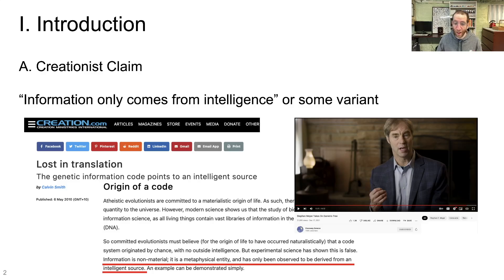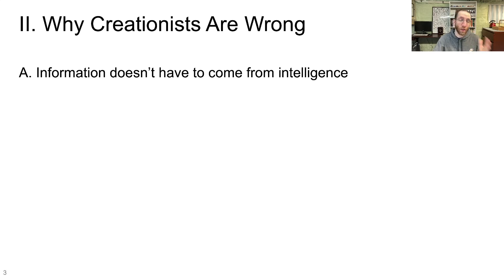So the claim there from Dr. Meyer is that information always comes from an intelligent source. Those are his words. So let's see why creationists are wrong about this. The reason is that information doesn't have to come from an intelligent source. That's it.